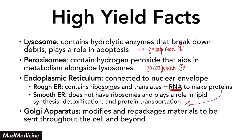The Golgi apparatus is a very important part of the cell. It will modify and repackage the protein transport components sent to it, as well as other things, and then send them to the cell — or beyond the cell if they need to be secreted. So the Golgi apparatus is like the post office, and the endoplasmic reticulum is like a factory.